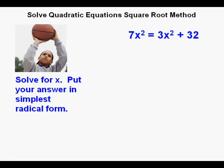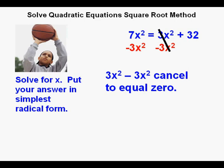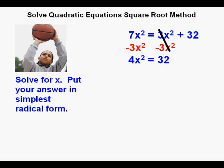Let's look at this problem. 7x squared equals 3x squared plus 32. In addition, Joe's teacher instructed him to find the answer in simplest radical form. Joe wants to combine like terms and sees the 7x squared on the left side of the equation and the 3x squared on the right side. He knows he needs to move one side of the quadratic terms over to the other side. So he subtracts 3x squared from both sides of the equation. He cancels out the 3x squared minus 3x squared on the right side of the equation. Now he has 4x squared equals 32.